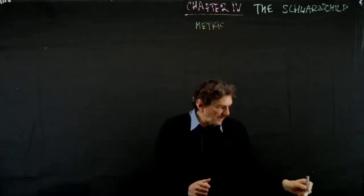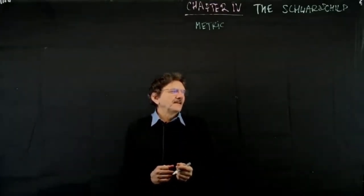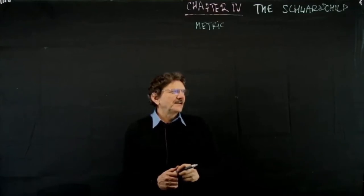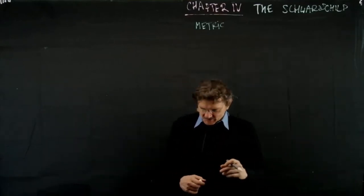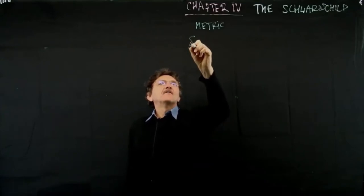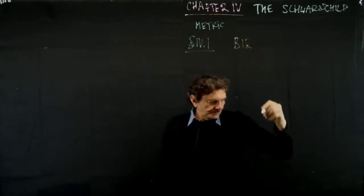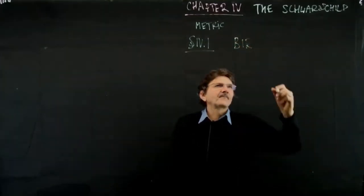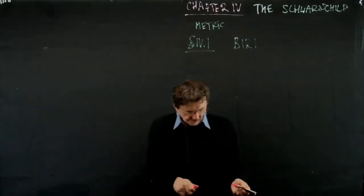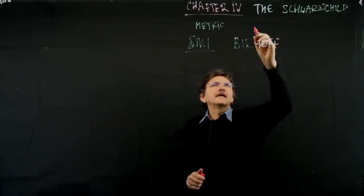I thought it would be fun if I came completely in black with black gloves so you would only see something appearing on the blackboard, but it's not dark enough here for this to be fun. Anyway: Schwarzschild black hole. So the Schwarzschild metric, and something called the Birkhoff theorem. There's a k missing here.